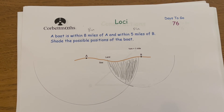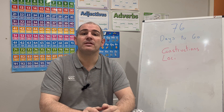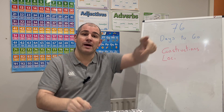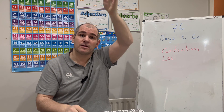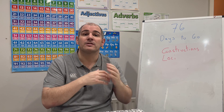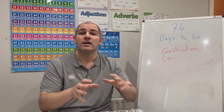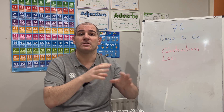So in this video we've looked at constructions and loci. I highly recommend the practice questions for both topics today — yes, you've watched me do them, but it's really useful to do them yourself using your compass, ruler, and pencil. We covered the perpendicular bisector, the angle bisector, other constructions, and then applied those skills to loci — finding positions and regions that satisfy certain rules.